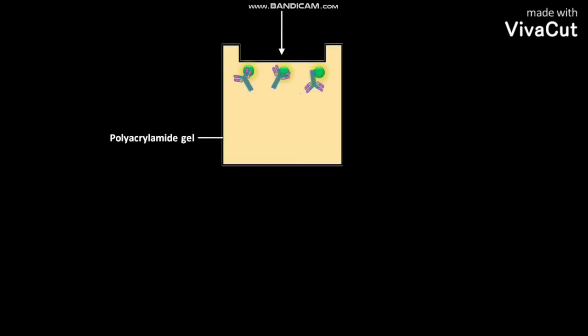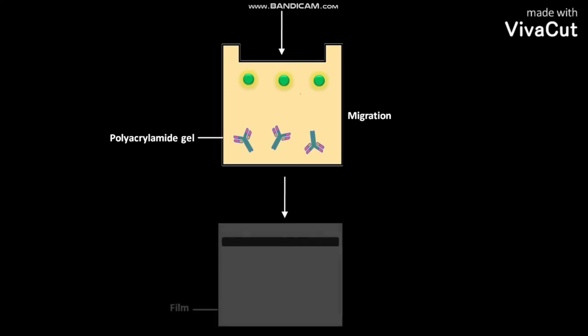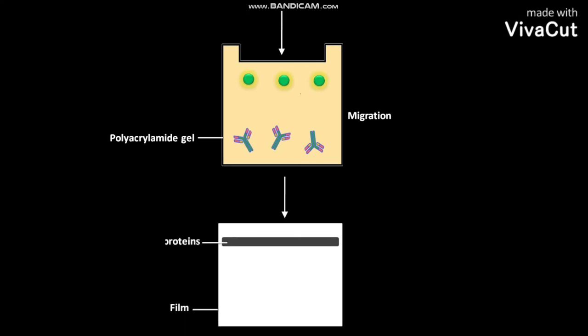During gel electrophoresis in polyacrylamide gel, the radiolabelled proteins or the antigens and antibodies undergo migration and get separated under the influence of electric field. Then, polyacrylamide gel containing separated radiolabelled proteins and antibodies is exposed to a film to detect radiolabelled proteins.